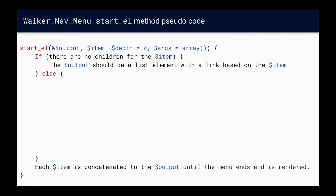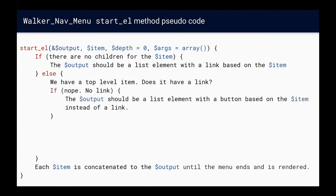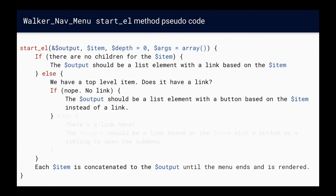Now that we've seen the path the markup takes through the walker class, let's zoom in to the start_el method where most of the logic happens. We can start by checking to see if the current item has children — should it be a link by itself or should it have a submenu? If not, we output the start of a list item with a link inside and finish. Otherwise, we need to know if the top-level item should be a link or a button. If it doesn't have a link, we output a list item with a button inside; otherwise, we need both a link and a button as a sibling, accounting for all cases in the markup.